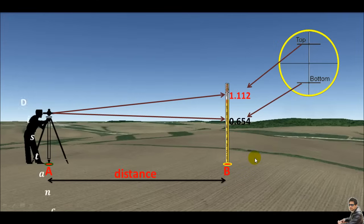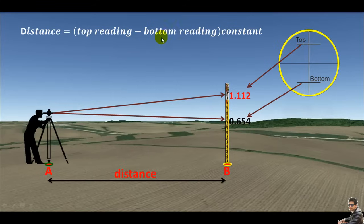Now we can use a plug-and-check formula. The top reading minus the bottom reading times the constant will be the horizontal distance between point A and point B.